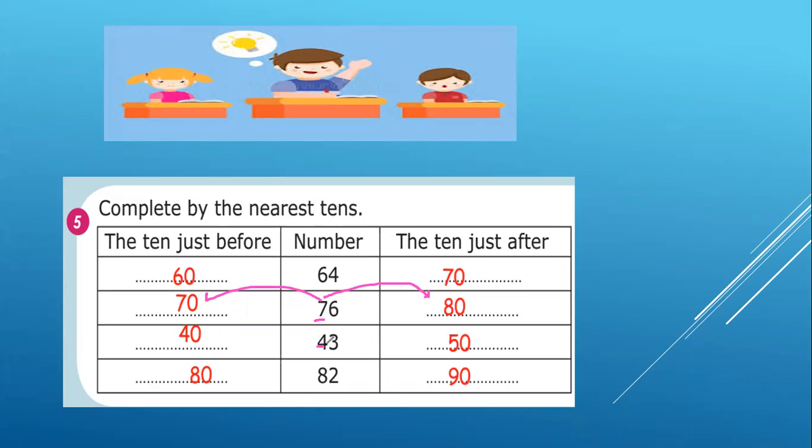The same here I underline the tens digit. 4 tens, it means 40. Plus 1 tens, it means 50. The same here. The same here. 8 tens, it means 80. Plus 1 tens, it means 90.